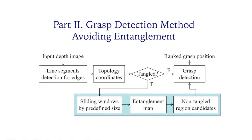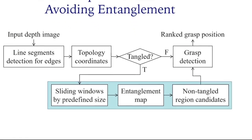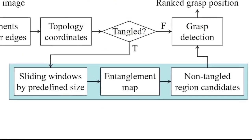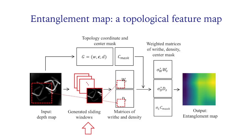If yes, we construct the entanglement map to obtain more position information of entanglement. We use the sliding window function to obtain matrices which store righty and density of each window. Then, we estimate the weight of each matrix and add another matrix obtained by center.